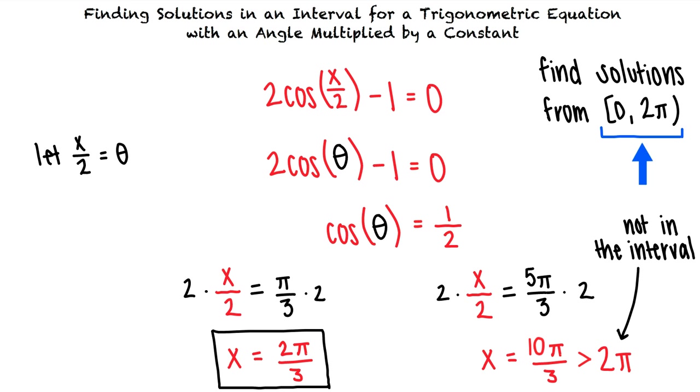When solving trigonometric equations involving an angle multiplied by a constant, we should substitute theta for the angle multiplied by a constant and then solve for theta. We can then use our solution for theta to solve for the original variable. We must then make sure that the solutions we found fall within the desired interval. That's exactly right. Great work!